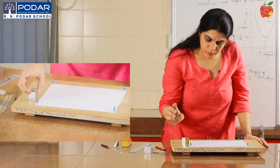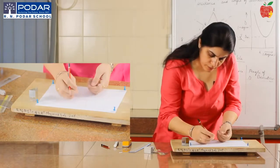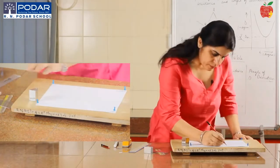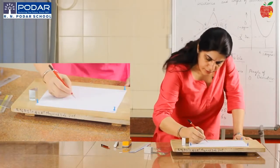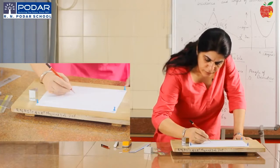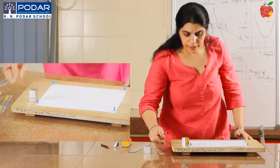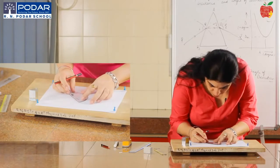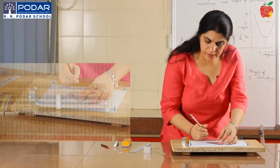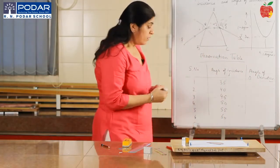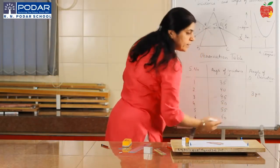Fix the third and fourth pins so that all four are aligned in the same straight line. Then remove the prism, encircle the points where the four pins were placed, and mark the incident ray and the emergent ray. Extend both rays — the angle between them is the angle of deviation. Measure it with a protractor. The angle of deviation here is 38 degrees. For an angle of incidence of 40 degrees, we get an angle of deviation of 30 degrees.